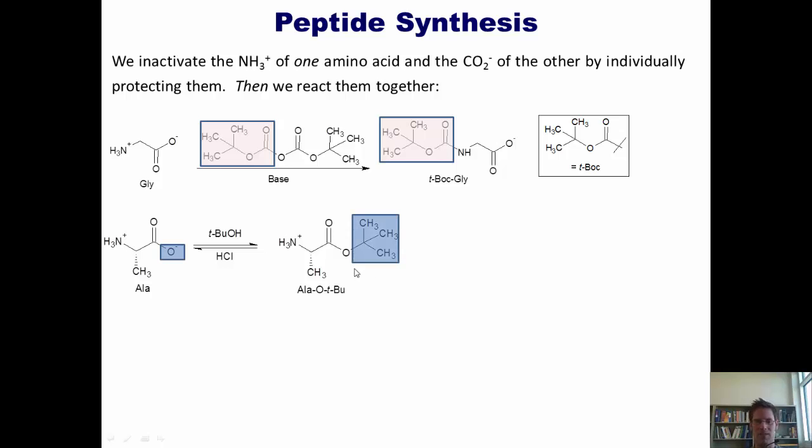So what you guys can see is that what I've done in these two separate reactions is I've protected the nitrogen on glycine, which is the amino acid that's going to end up on my left. I've also protected or masked the OH of alanine, which is the amino acid that will end up on my right. These groups that I've highlighted in these cute little colored boxes are the protecting groups for these individual portions of these molecules.